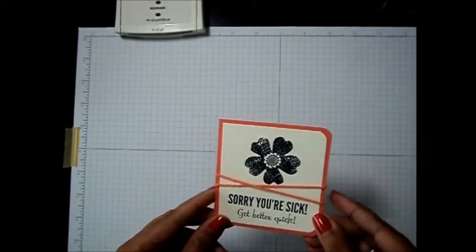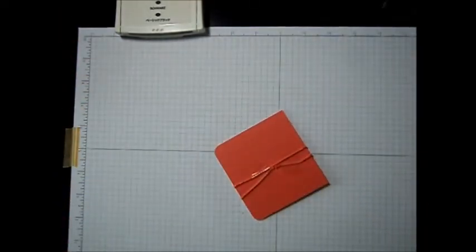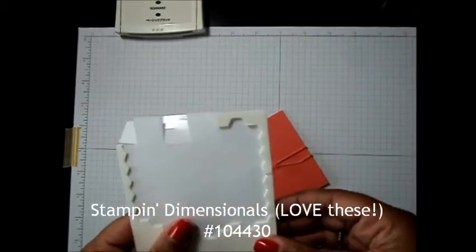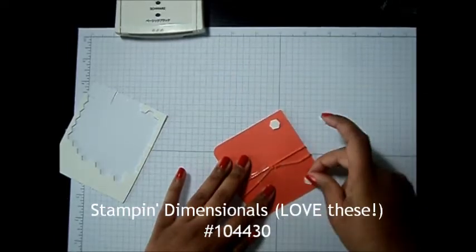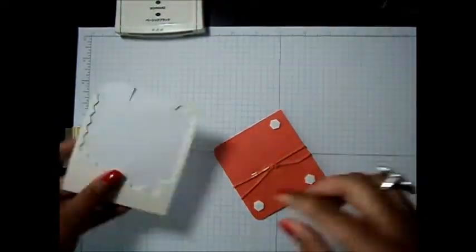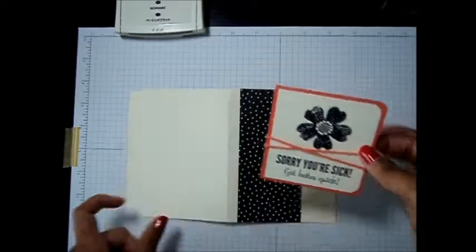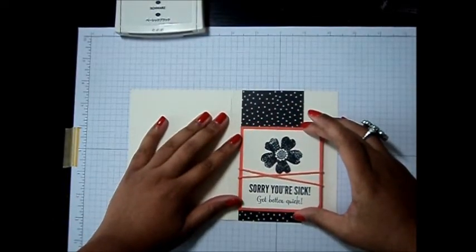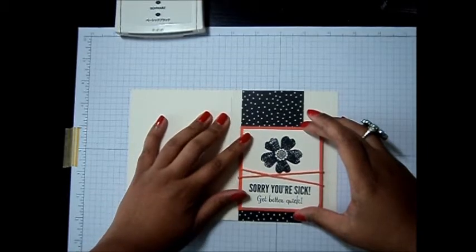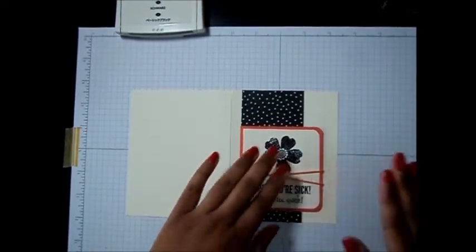Okay, so I've got my Baker's Twine right where I want it. And I'm going to go ahead and flip this over. And we are going to add some dimensionals to the back. And I'm going to do five. I think five should be enough. So I'm going to put this panel towards the bottom of my card. Right here should be good. Give it a press.